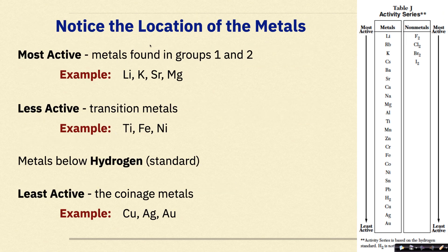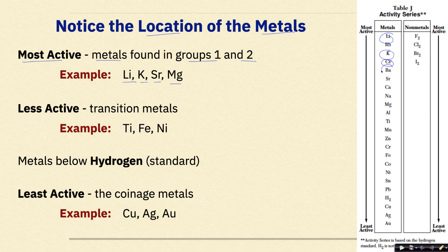Let's take a closer look at the location of the metals. Your most active metals are metals found in Group 1 and Group 2 — for example, Li, K, Sr, and Ba. They're going to be at the very top. So pretty much your Group 1 and Group 2 metals are all at the top. Your less active metals, your transition metals, are found sort of in the middle.